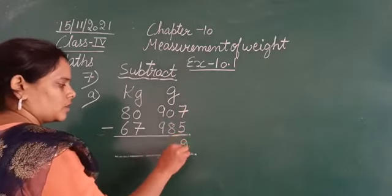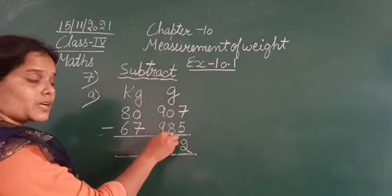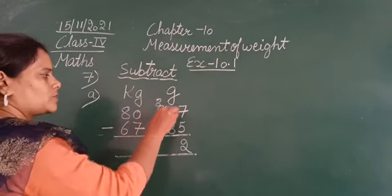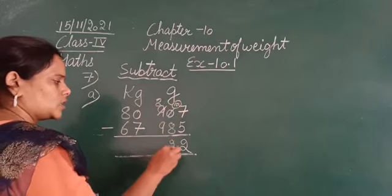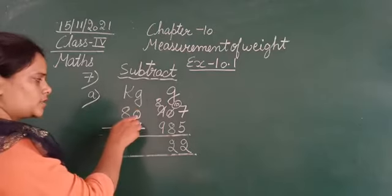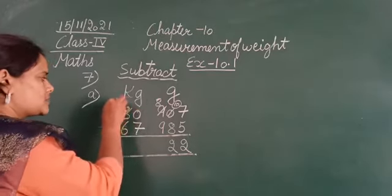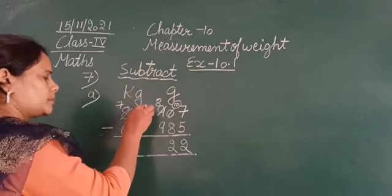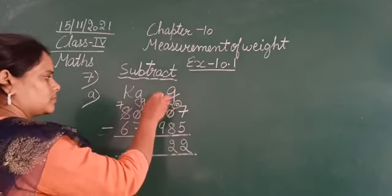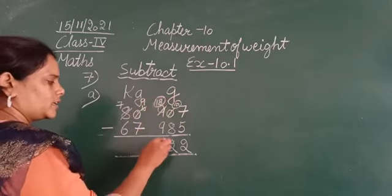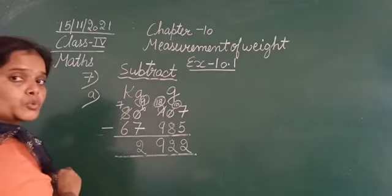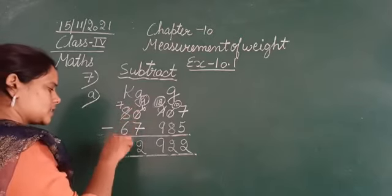So let's do it. 7 minus 5 is 2. 0 minus 8 — not possible, so this 0 will borrow from here. This will become 8, it will become 10. 10 minus 8 is 2. 8 minus 9 — not possible, so it will borrow. But it's already 0, so it will ultimately borrow from further. It becomes 7, this becomes 10. When it lends 1, it becomes 9 and this becomes 18. 18 minus 9 is 9. 9 minus 7 is 2. 7 minus 6 is 1.